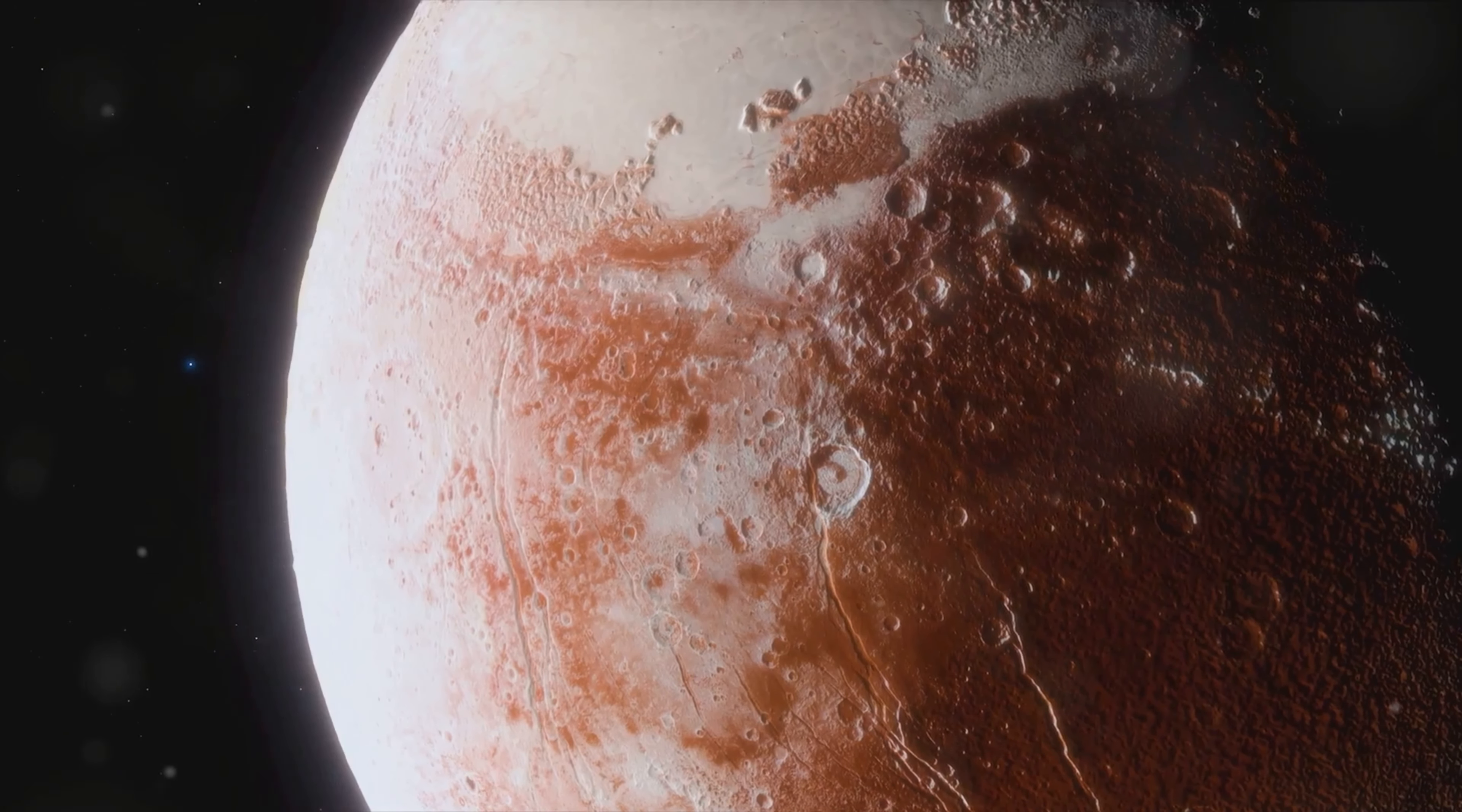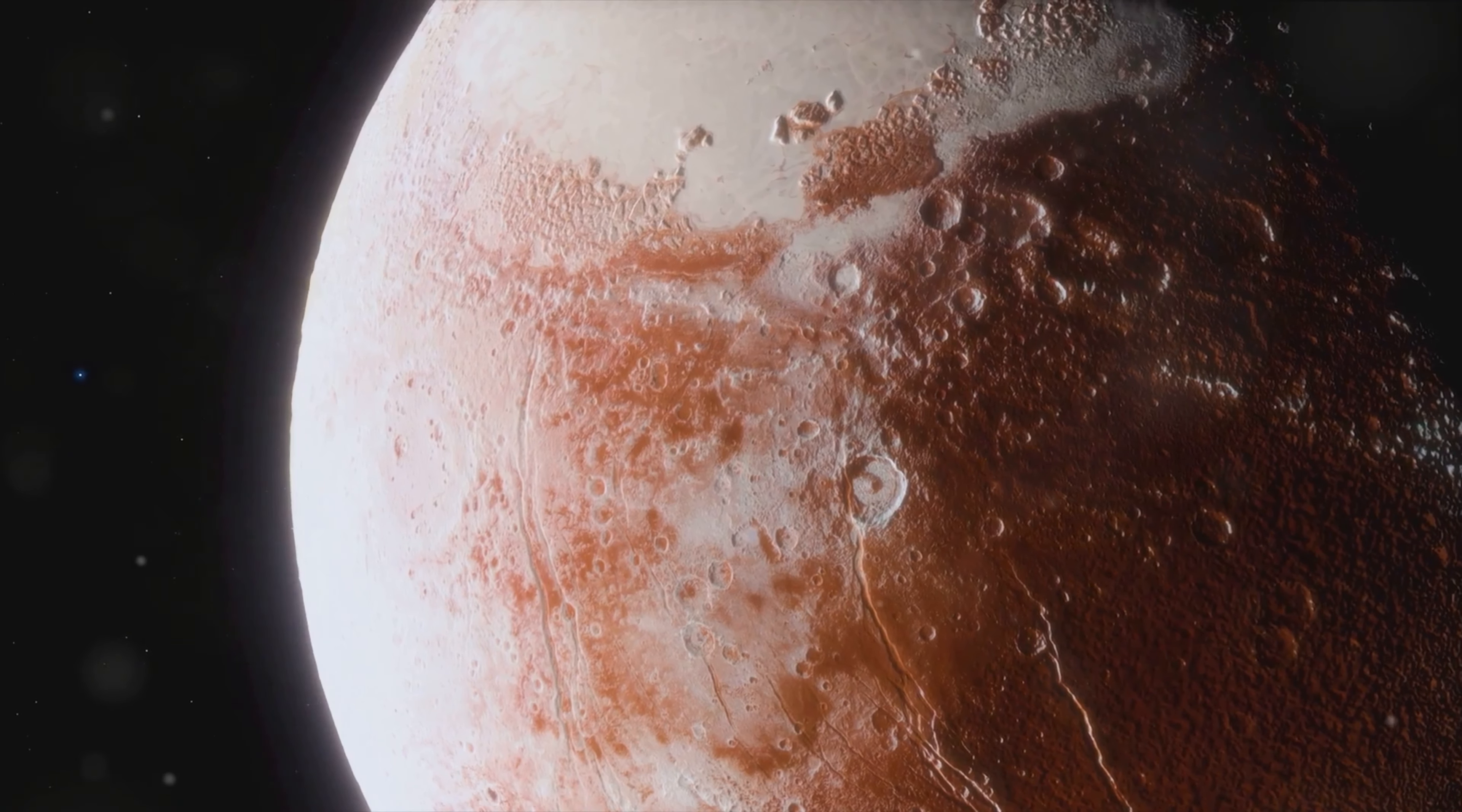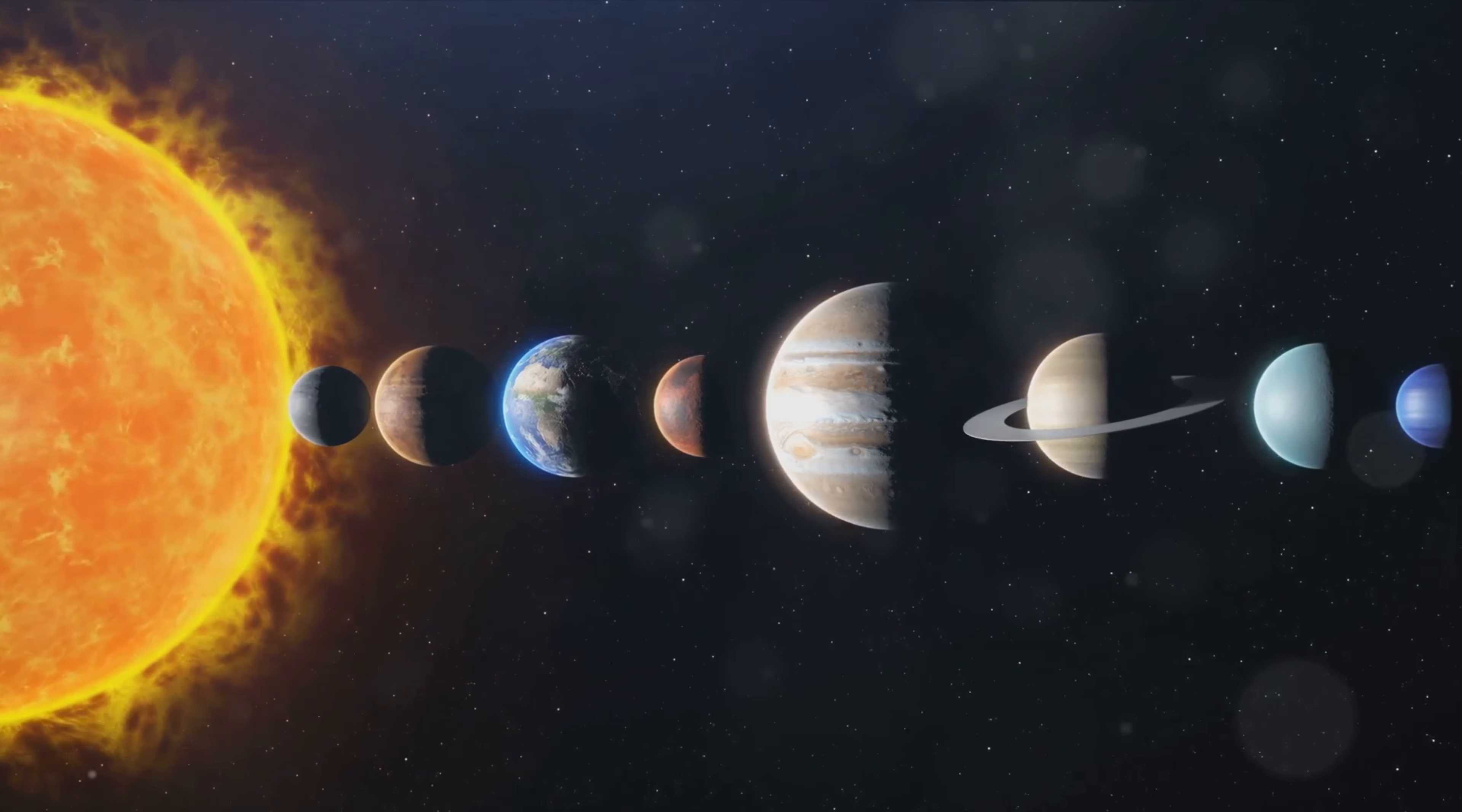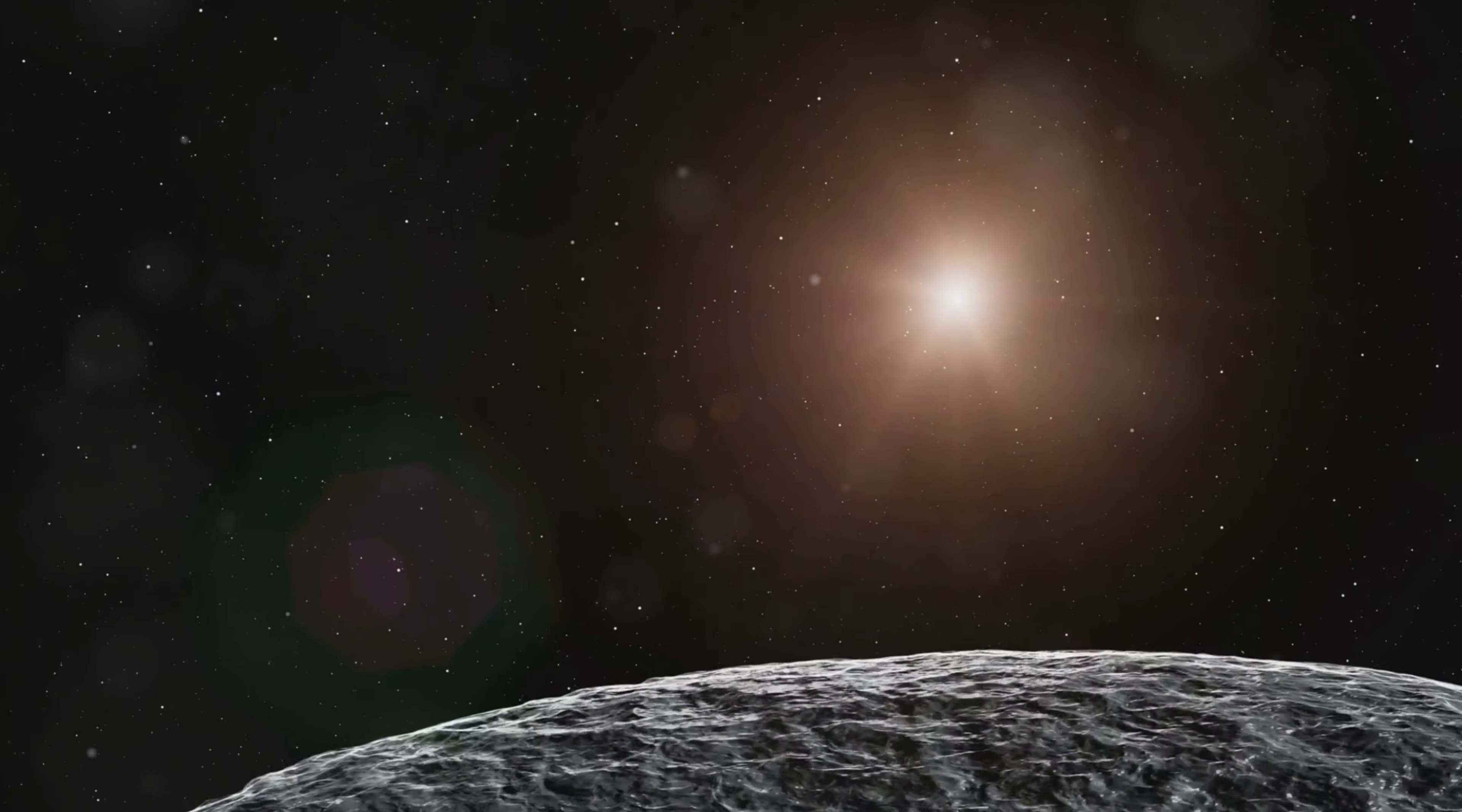In 2006, the demotion of Pluto from planet to dwarf planet stirred a public and scientific uproar, seeming to set a seal on the family of our solar system. Yet recent advances suggest this story is far from over.